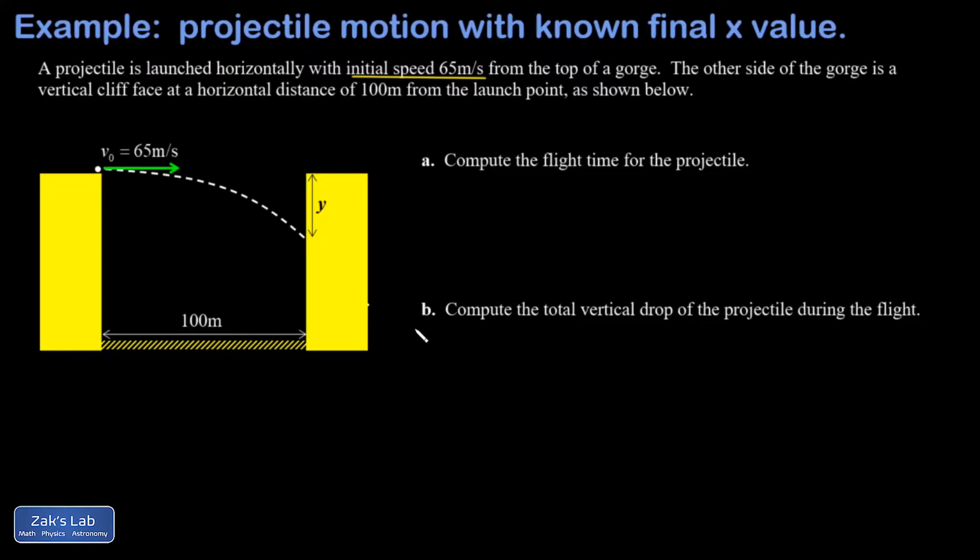We're going to start in part a by finding the flight time. This is a purely horizontal question. We know how far the projectile moves horizontally, we know how fast it's moving horizontally, so we should be able to get the time pretty quickly. Remember the x velocity in a projectile motion problem is constant because there are no forces acting horizontally to change that velocity.